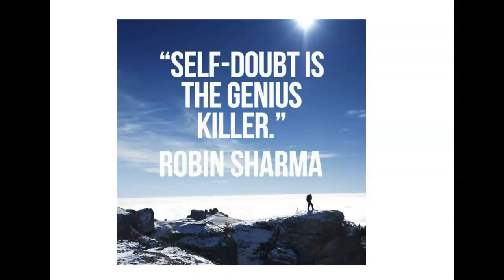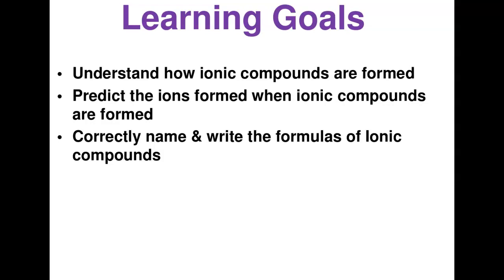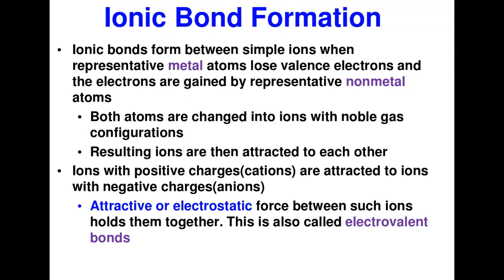Our learning goals for today: number one, we're going to understand how ionic compounds are formed. We will also predict how ions are formed when ionic compounds are made. And then we will correctly name and write the formulas of four classes of ionic compounds. These will be our three learning goals in this class.